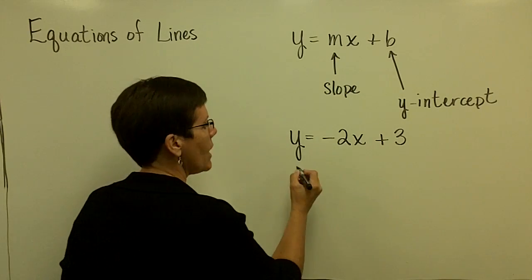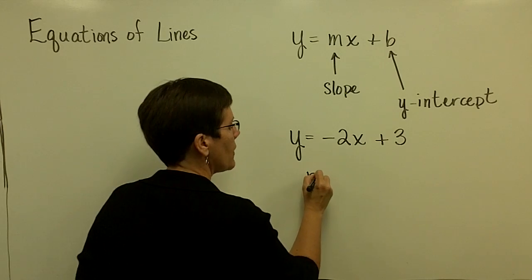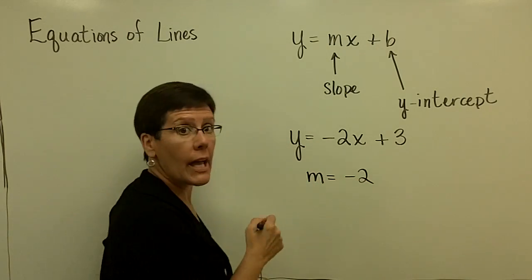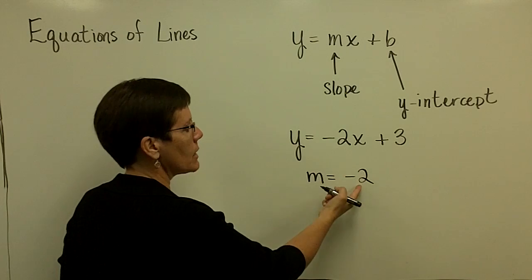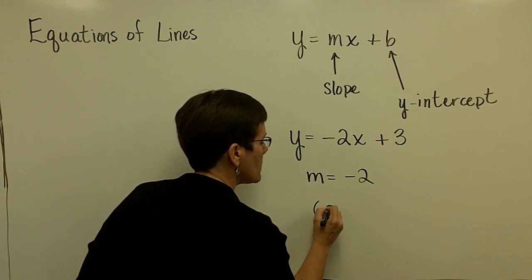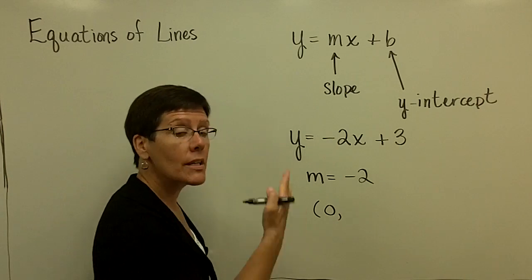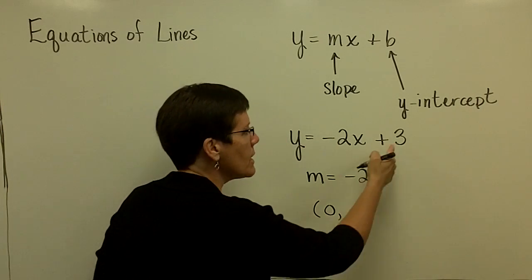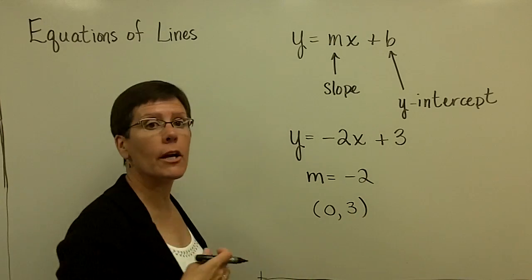you are able to tell me that the slope of that line is the coefficient of the x term, in this case negative 2. The y-intercept for this equation always has x value 0 because that's a point on the y-axis, and this value is the y value in that ordered pair.